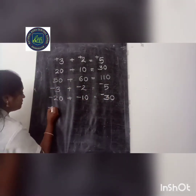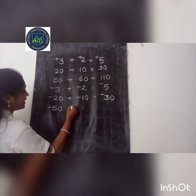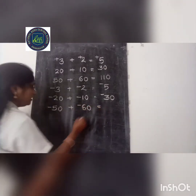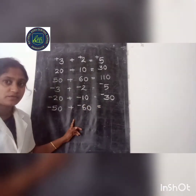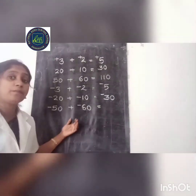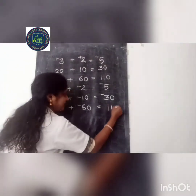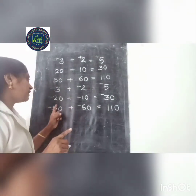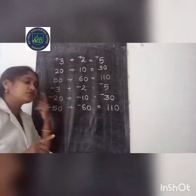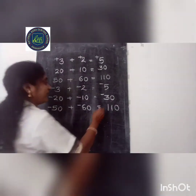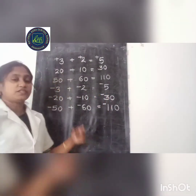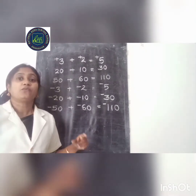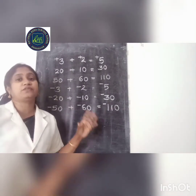One more question: minus 50 plus minus 60. Both numbers are negative, so we add 60 plus 50 to get 110. We check the sign — both numbers are negative, so we put the negative sign, giving negative 110. So the second rule is: if we add 2 negative integers, we give the negative sign.